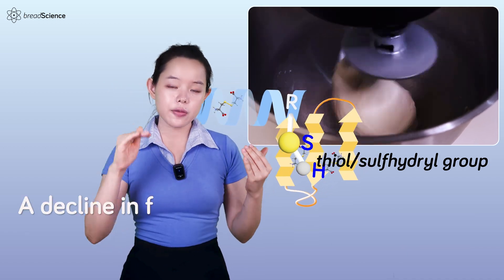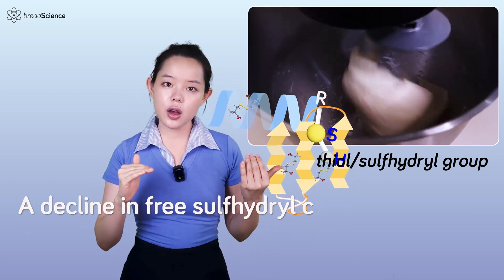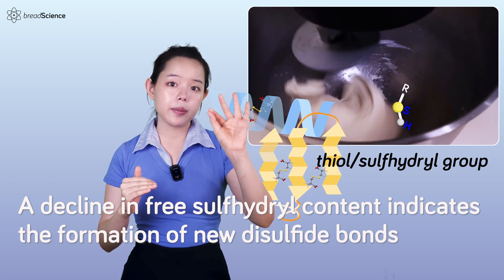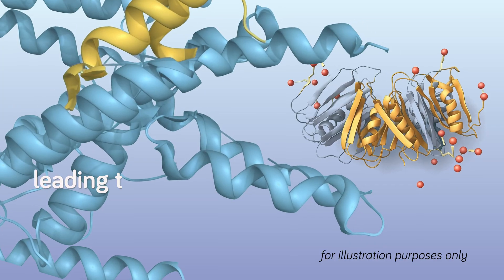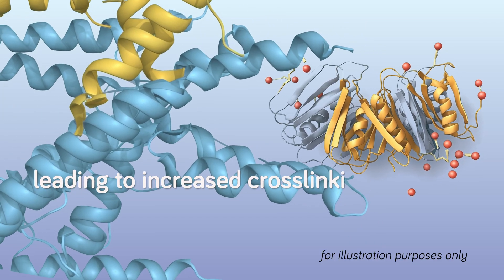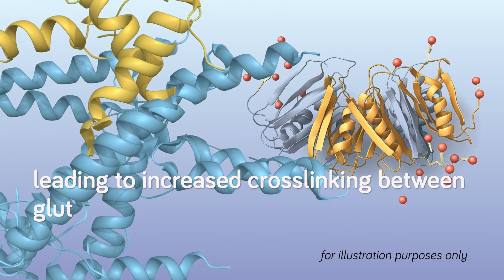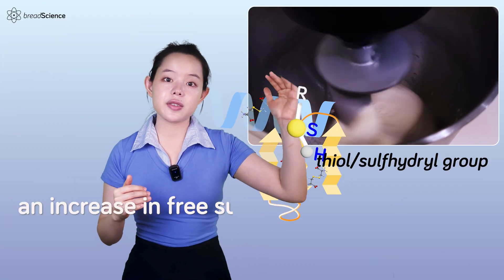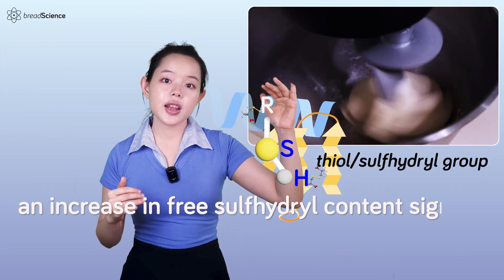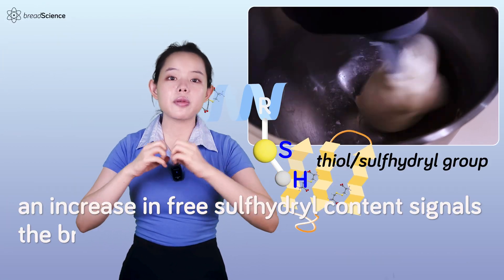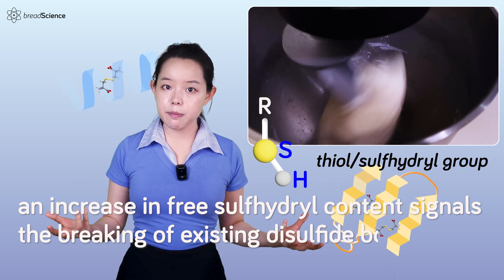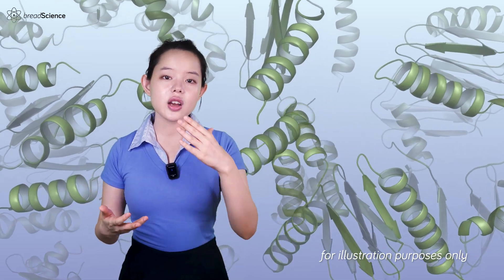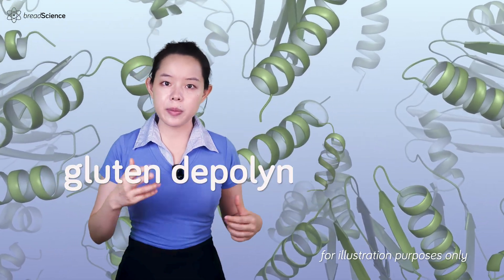A decline in free sulfhydryl content indicates the formation of new disulfide bonds, leading to increased cross-linking between gluten proteins. Conversely, an increase in free sulfhydryl content signals the breaking of existing disulfide bonds, which could result in gluten depolymerization.